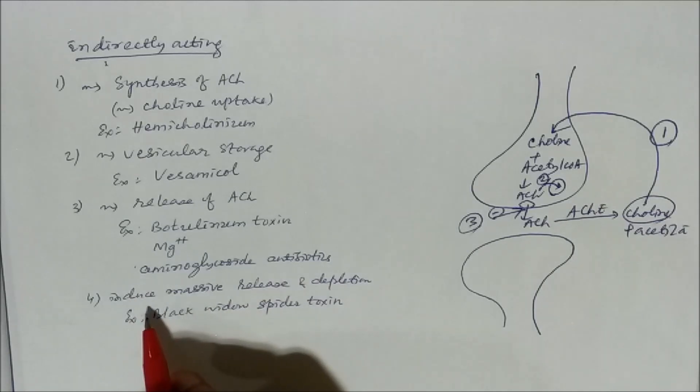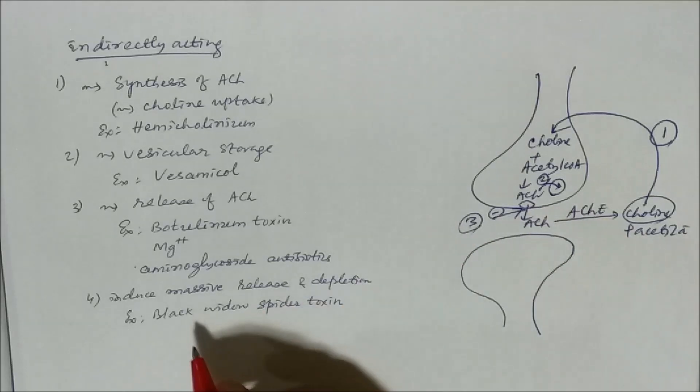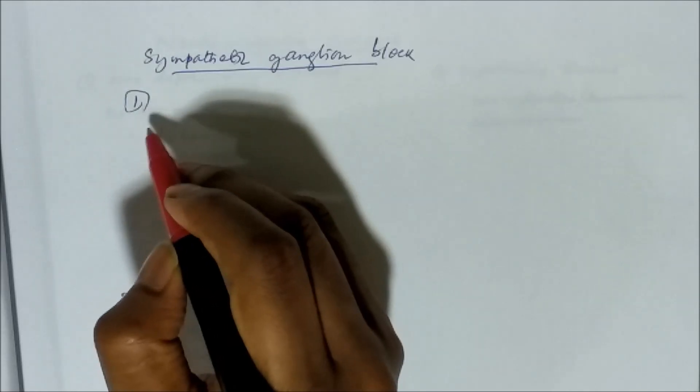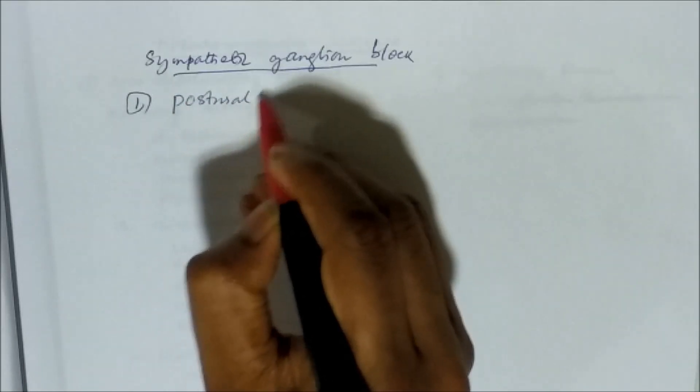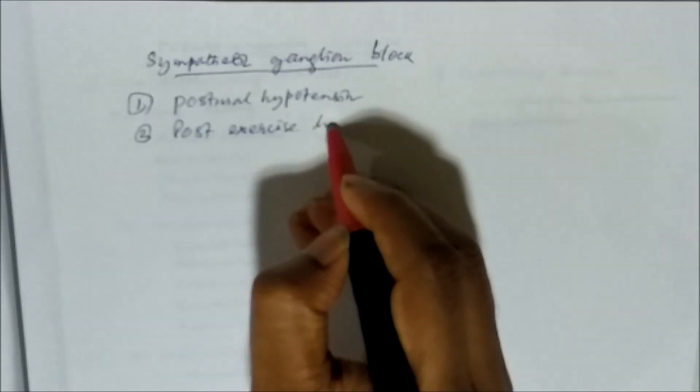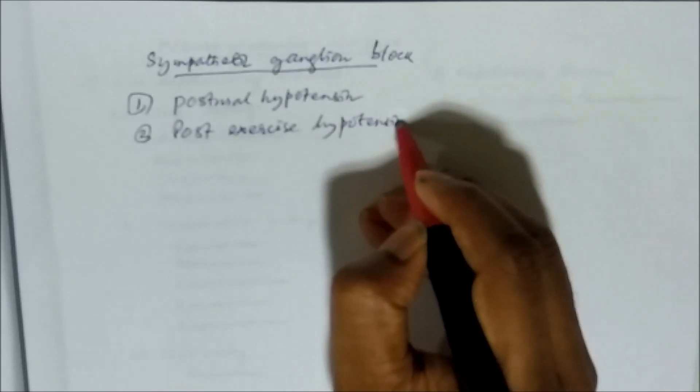Another group induces massive release of acetylcholine and immediately causes depression — an example is black widow spider toxin. All these ganglion blockers can be used mainly in hypertensive crisis. Because of sympathetic ganglion block, they produce two major phenomena: postural hypotension and post-exercise hypotension.